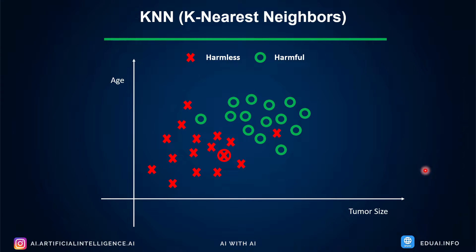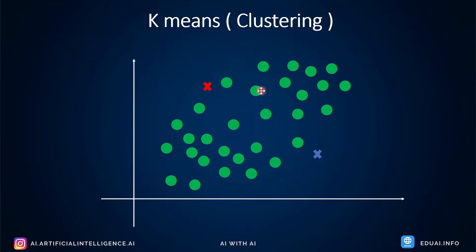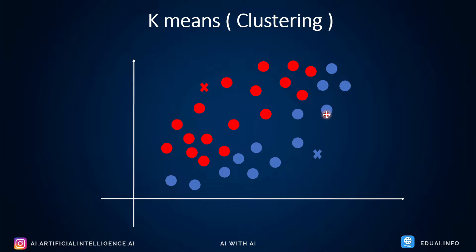Now let's talk about K-Means. In short, K-Means is part of the unsupervised learning family, meaning it does not rely on pre-labeled data. As you see in the image, data looks similar — no labels, no classification. How does K-Means form clusters? To start, it drops two seeds — a red seed and a blue seed — and asks all data points which one they are nearest to. Data points closer to red become red, and those closer to blue become blue. This is how it forms initial clusters.